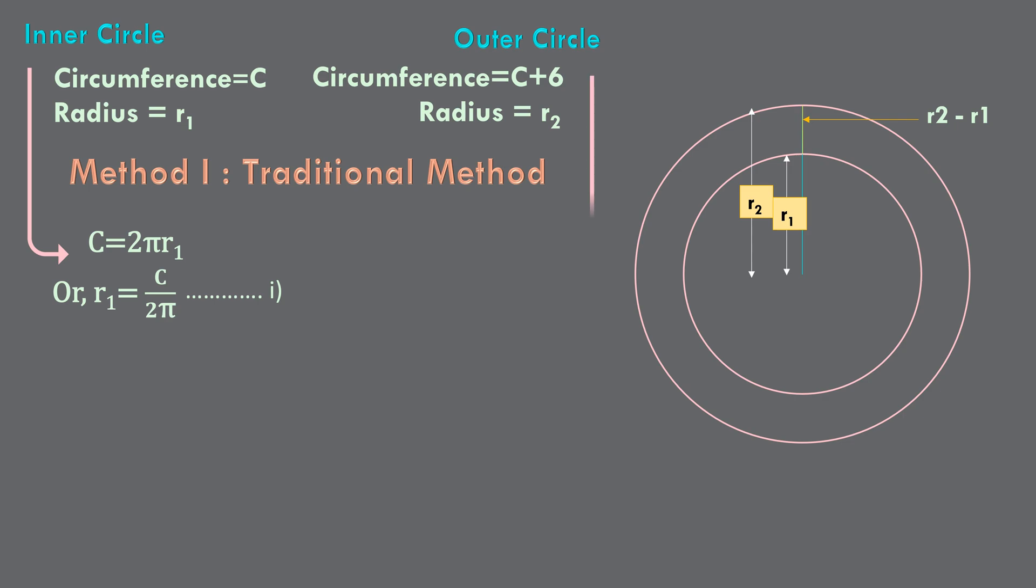Now, let's consider the outer circle. Here, C plus 6 equals 2pi R2. R2 then will be equal to C plus 6 by 2pi. Let this be equation 2.